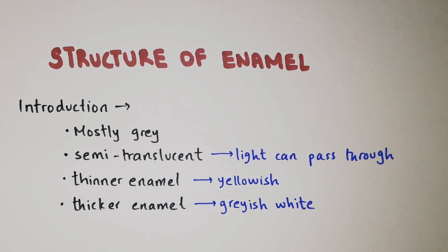Thinner enamel is yellowish and thicker enamel is grayish white. Thinner enamel is yellow because of the presence of underlying dentin, which is yellow in color. Thicker enamel is grayish white because that is the true color of the enamel.